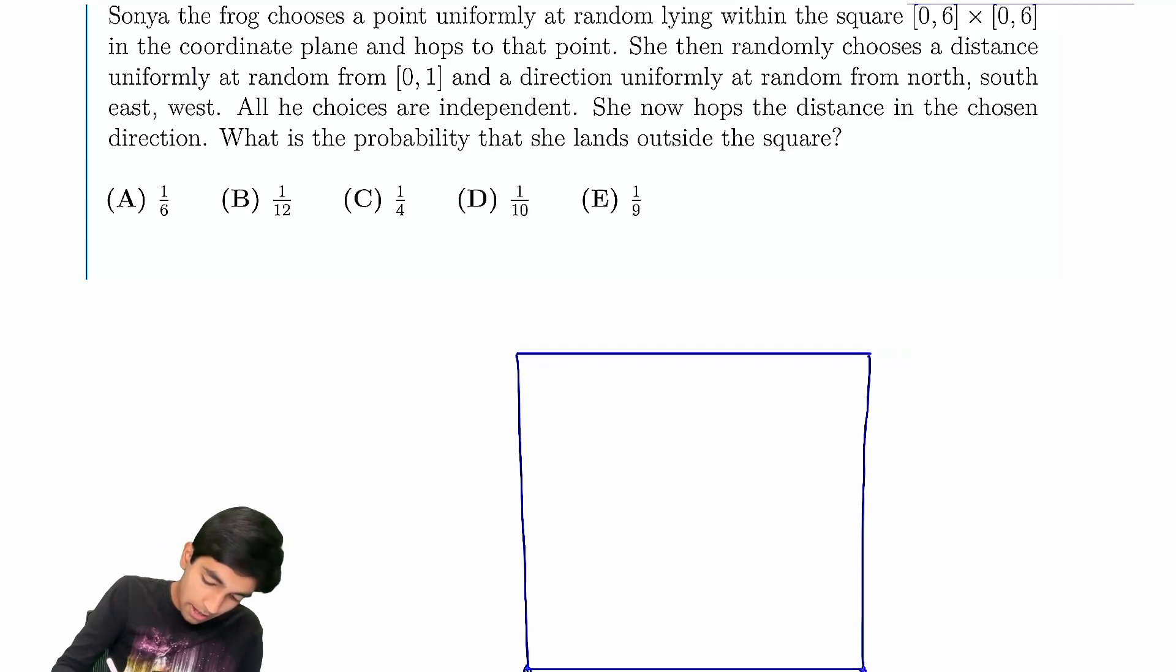Right, this is (0,6), and then this is 0, and then 6. You randomly choose a point lying within the square, and then you randomly choose a distance between 0 and 1, the closed interval, uniformly at random, and then you randomly choose a direction.